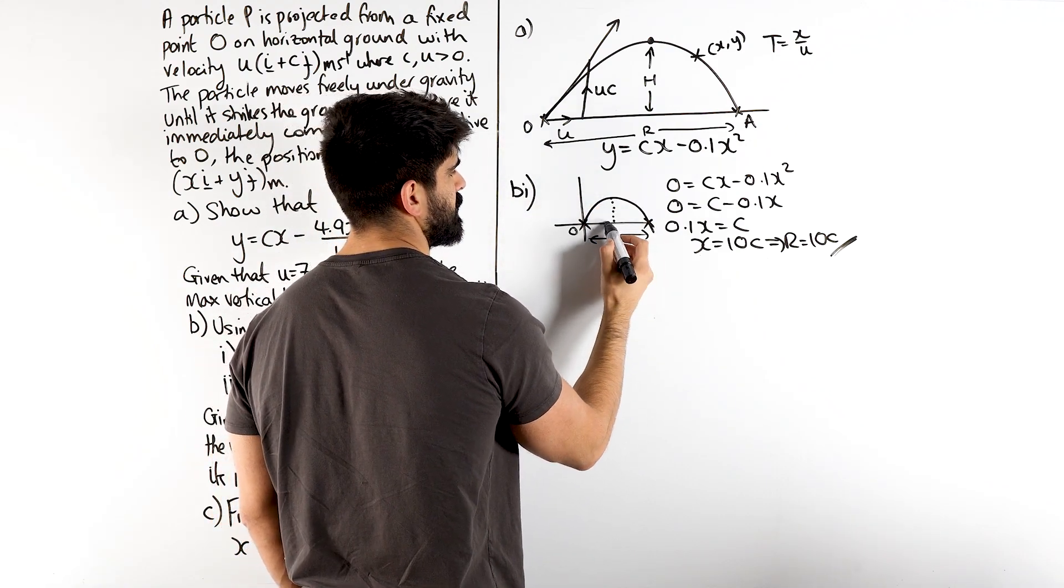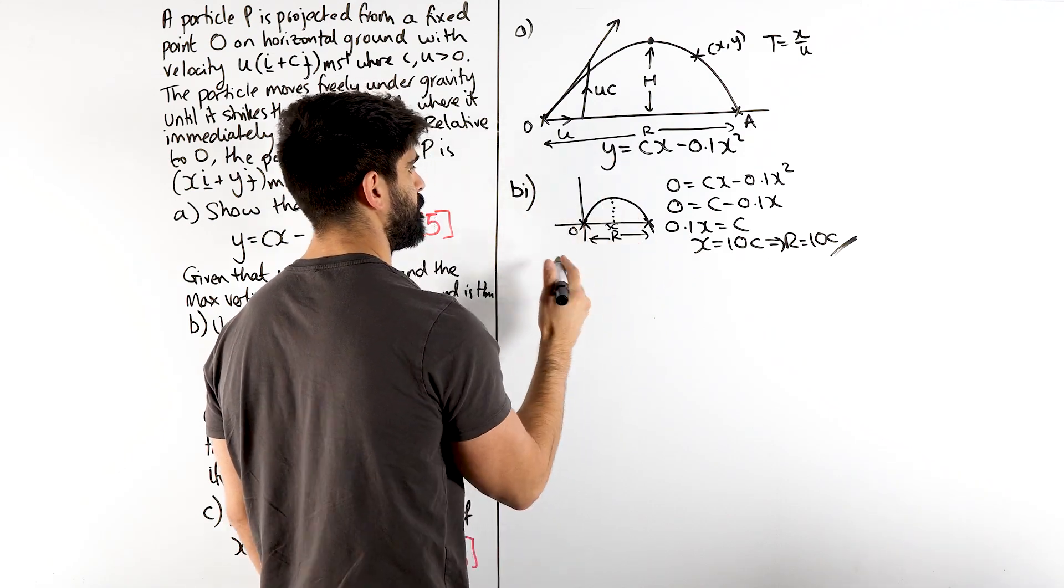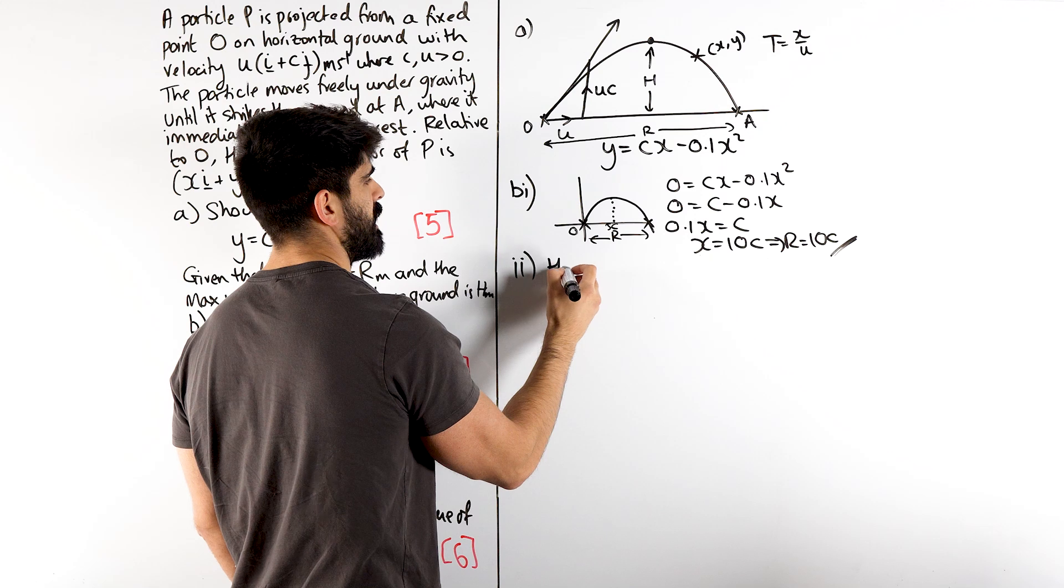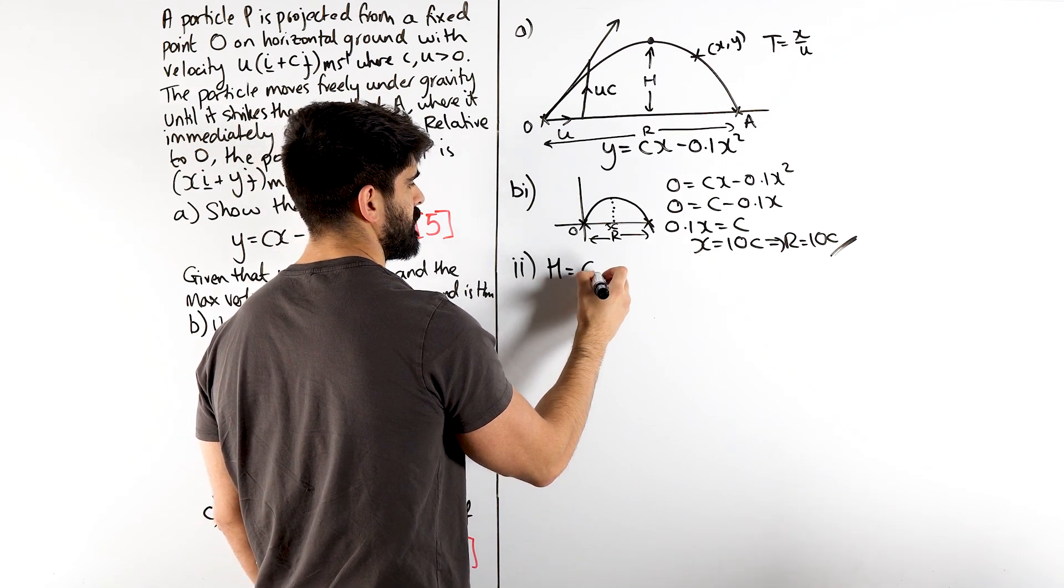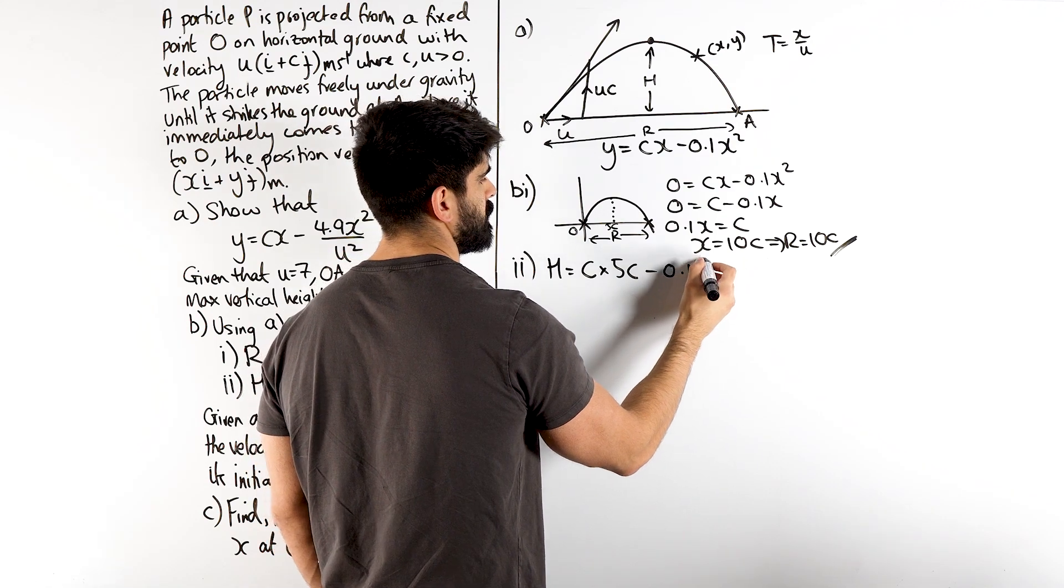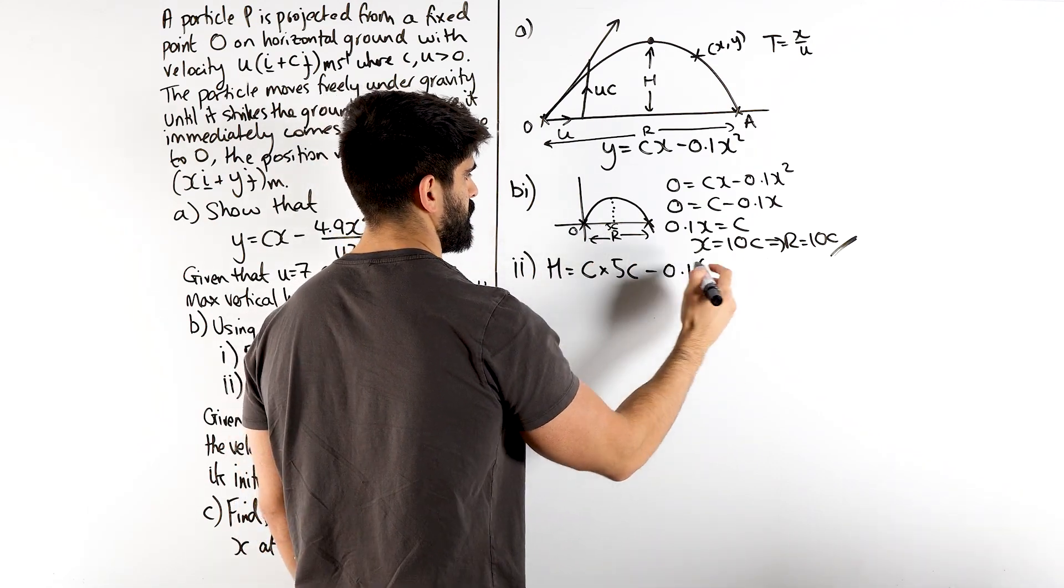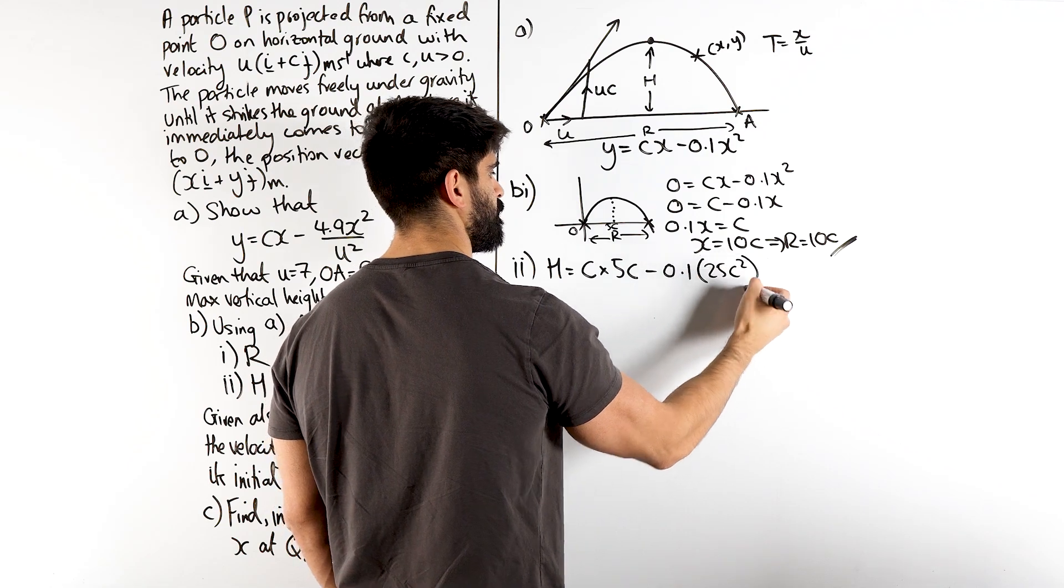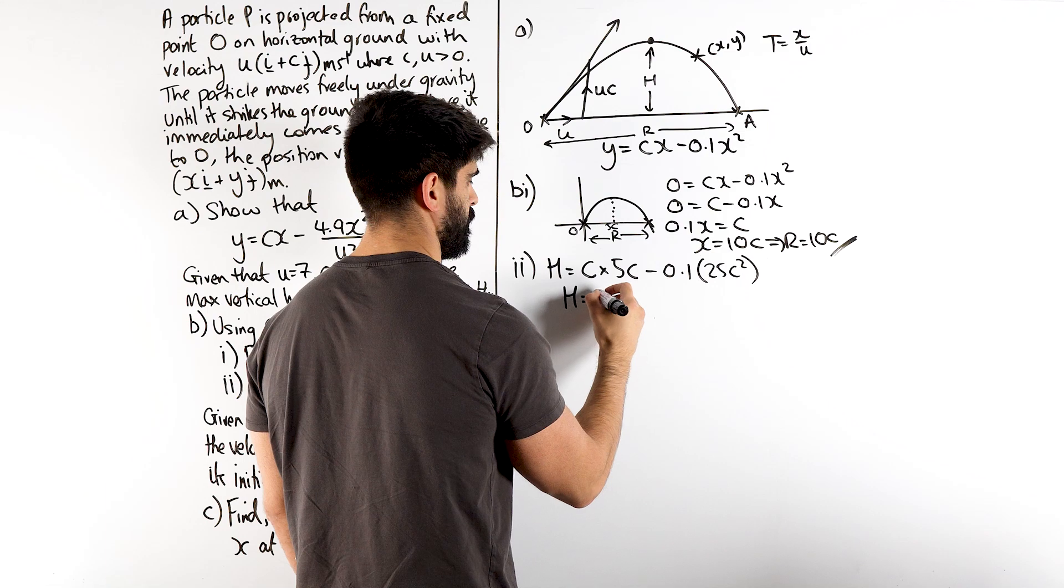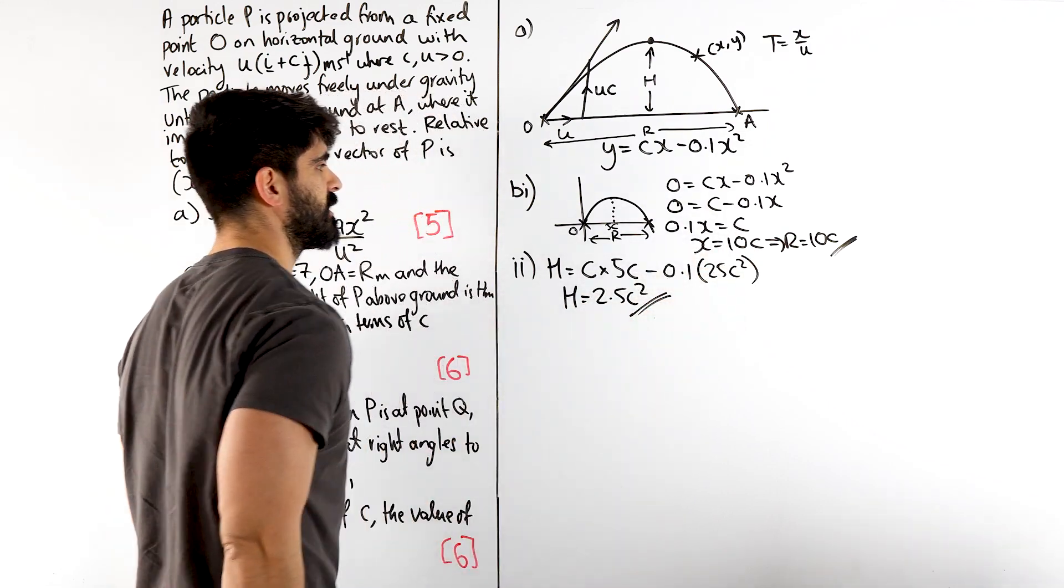Cool? How do we use that to work out H? Well, using symmetry. If that's 10C, this is 5C. What do we do with that? We just want to work out the Y value. We just know that X is 5C minus 0.1 times X squared. X squared is 25C squared. So, H is 5 minus 2.5, which is 2.5 C squared. Easiest six marks ever.